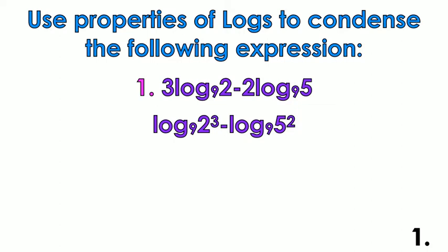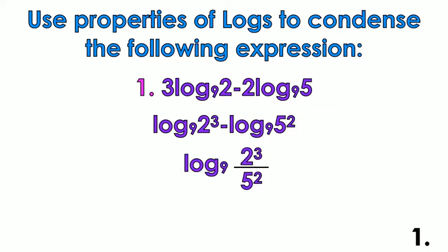The quotient property tells us that that minus sign is going to turn into a quotient, so we're going to get log base 9 of 2 cubed over 5 squared. You can simplify that to be log base 9 of 8 over 25, though you don't really have to do all that.